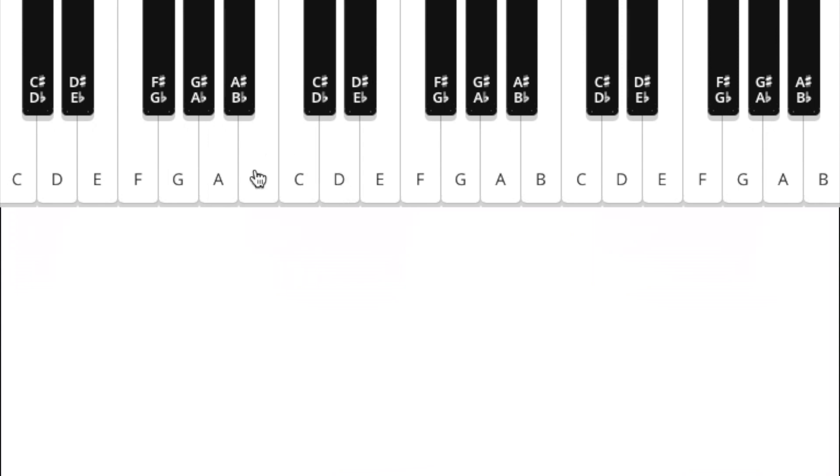Another example of a half step would be from B to C. They are two white notes next to each other but there's no notes between them, so they are a half step apart. But B and C sharp are separated by one note, so these two notes are a whole step apart. Half steps versus whole steps.